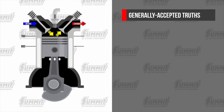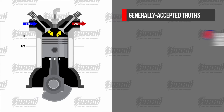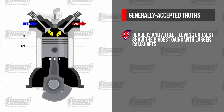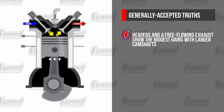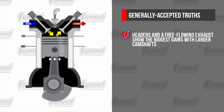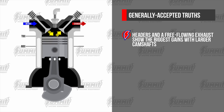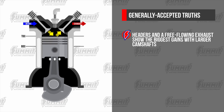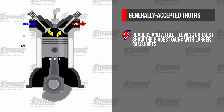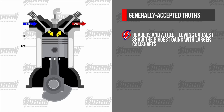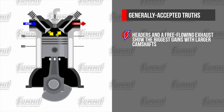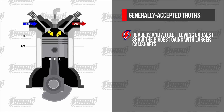Now you know why cams with a lot of duration and overlap make big power up top but suffer drivability. Headers and free-flowing exhausts show the biggest gains with larger cams. A standard exhaust system may have up to 10 pounds of back pressure at redline under wide open throttle, while a free-flowing exhaust will have less than one pound, and this reduces the effects of reversion by keeping flow going the right direction.